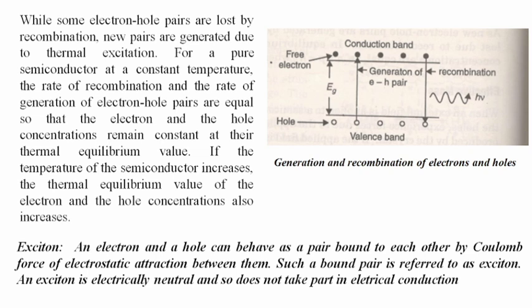An electron and a hole can behave as a pair bound to each other by the Coulomb force of electrostatic attraction between them. Such a bound pair is referred to as an exciton, and an exciton is electrically neutral, so it does not take part in electrical conduction.